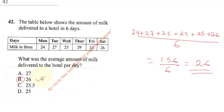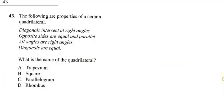Now let us move to question 43, which says the following are properties of a certain quadrilateral: diagonals intersect at right angles, opposite sides are equal and parallel, all angles are right angles, diagonals are equal.